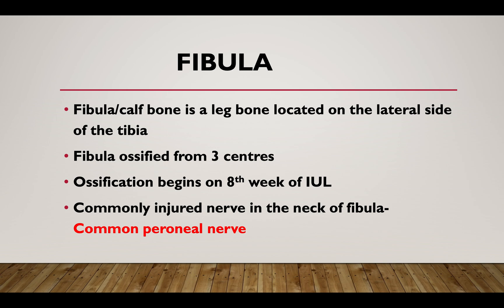Fibula, or calf bone, is a leg bone located on the lateral side of the tibia. It is ossified from three centers, and ossification begins at eight weeks of intrauterine life. The commonly injured nerve at the neck of the fibula is the common peroneal nerve.